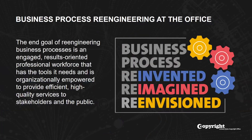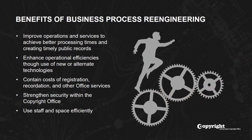The end goal of re-engineering business processes is an engaged, results-oriented, professional workforce that has the tools it needs and is organizationally empowered to provide efficient, high-quality services to stakeholders and the public. BPR will also provide the library and the Copyright Office with support services to prepare the organization for future modernization initiatives. The Copyright Office's BPR initiative will support the achievement of defined objectives, such as improving operations and services to achieve better processing times and creating timely public records.